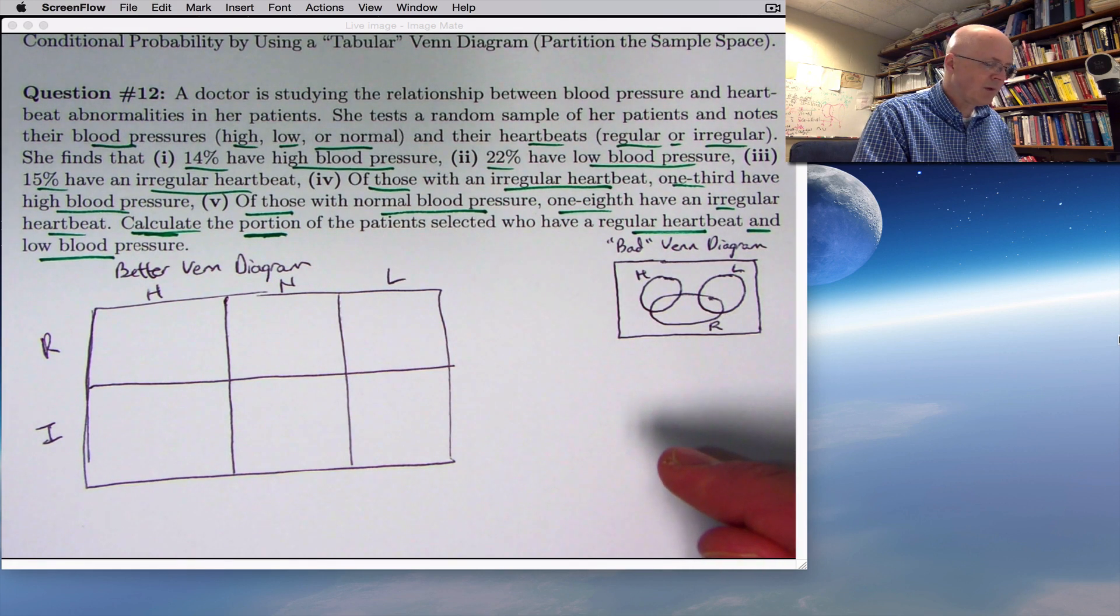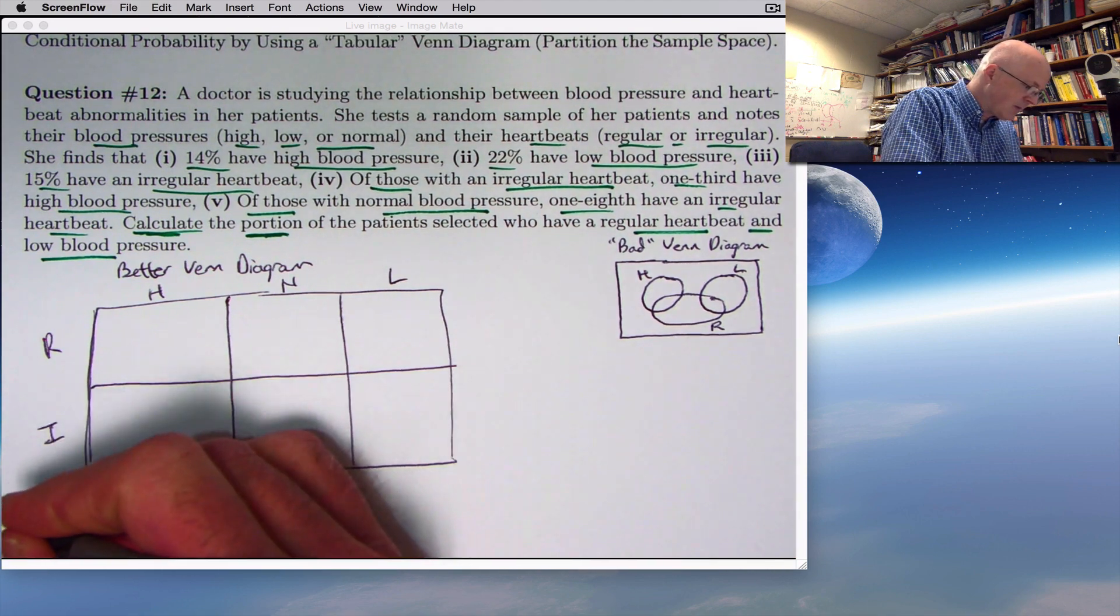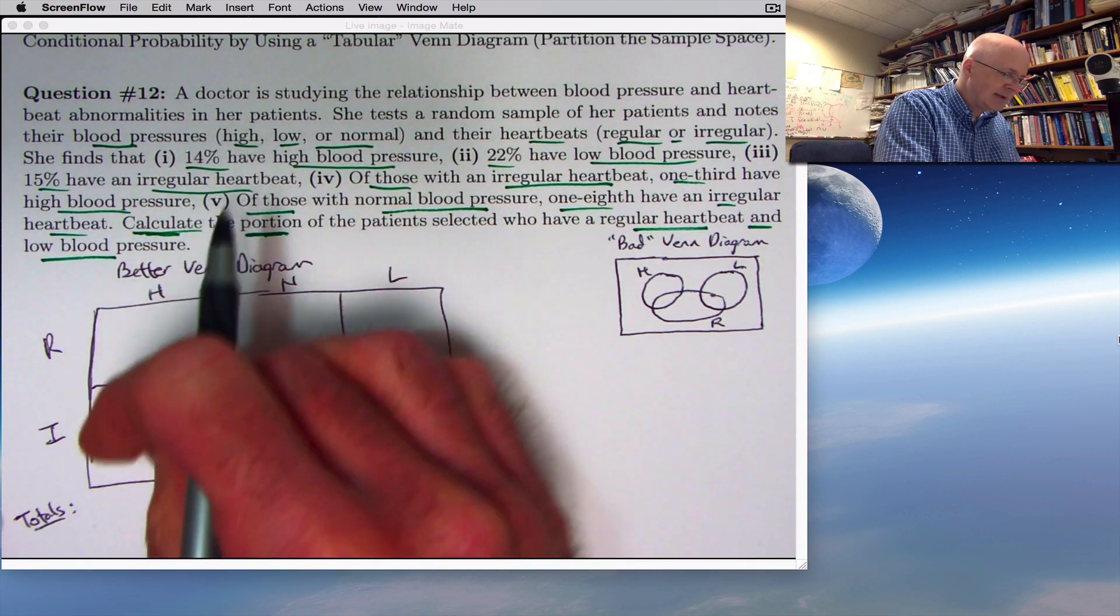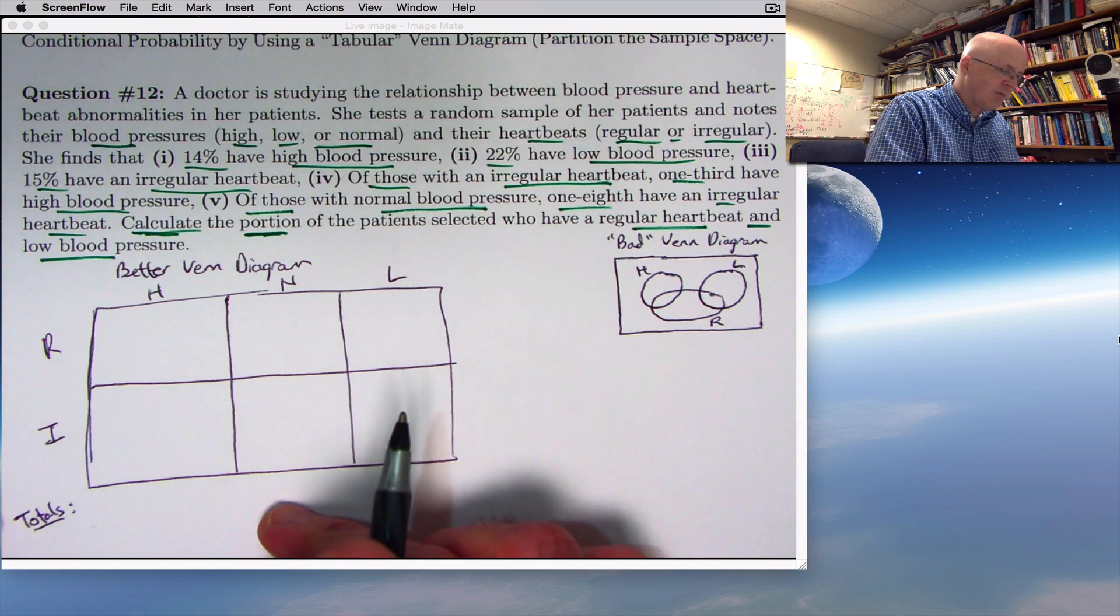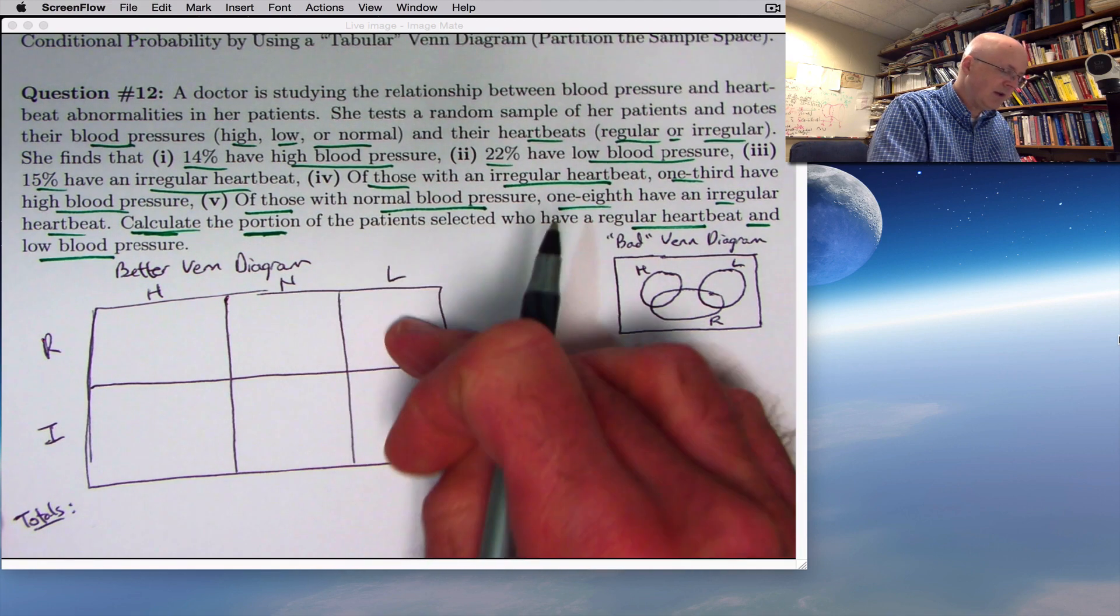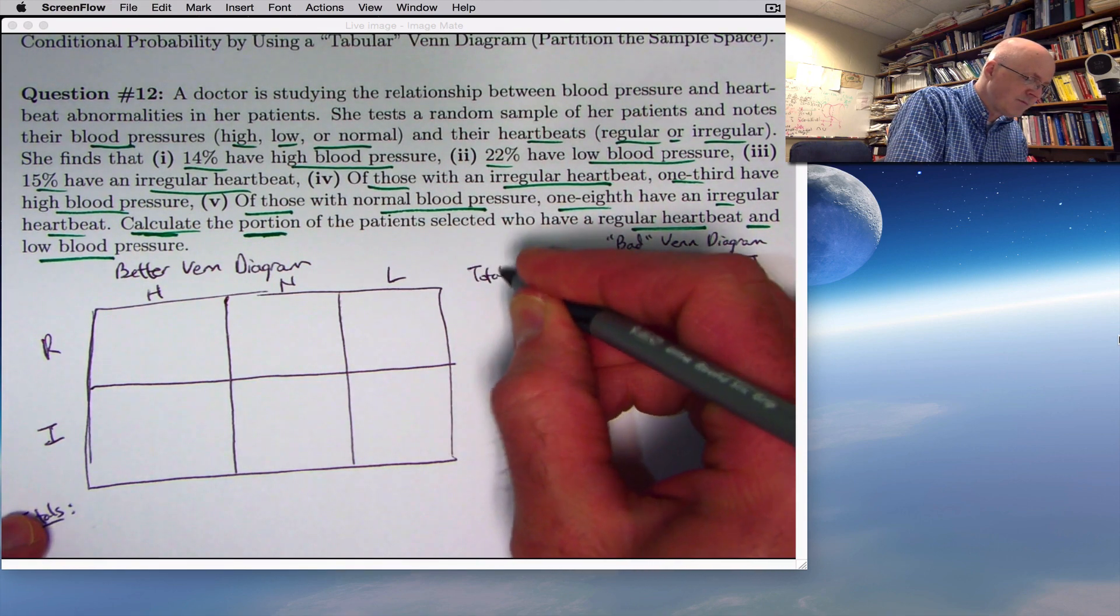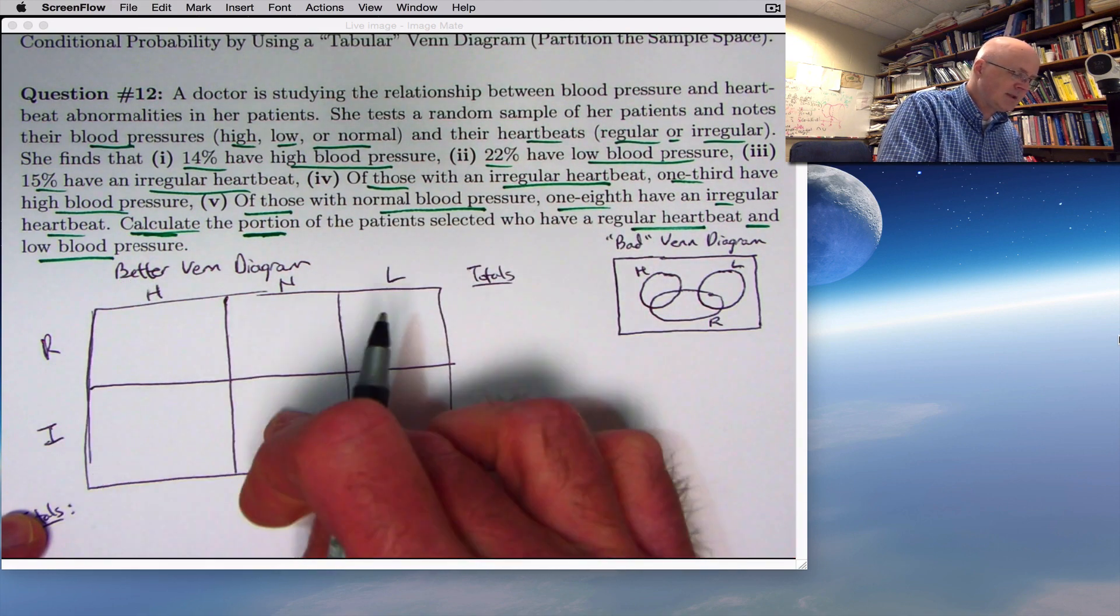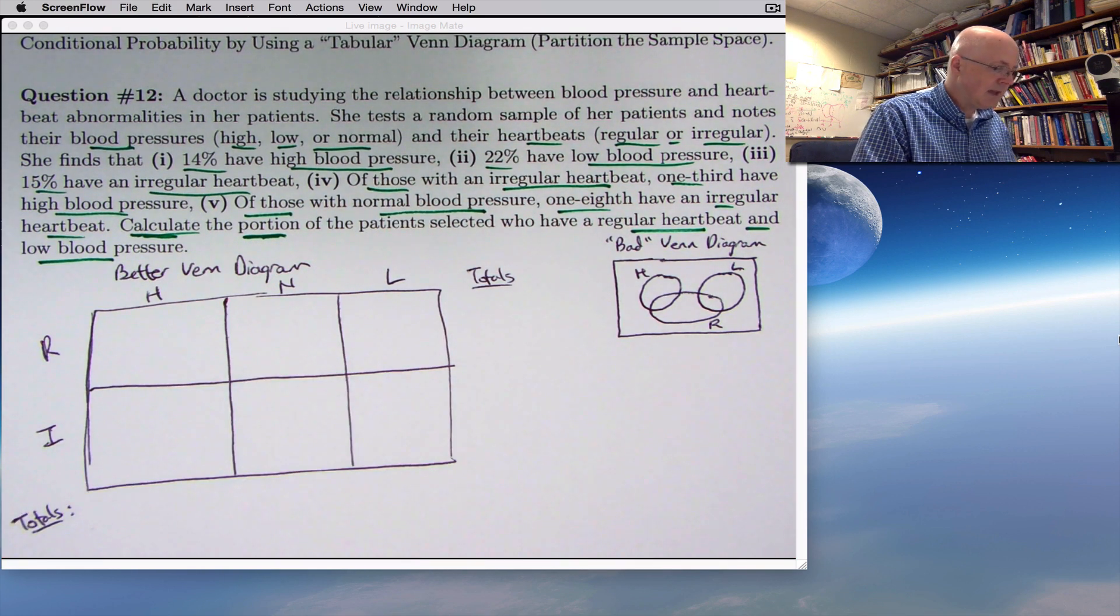And if you think about the information in 1, 2, and 3, what those probabilities really represent are totals, in a sense. So I'm going to go ahead and put the word totals down here. Imagine adding up the ordinary probabilities here and here to get the total for those with high blood pressure. Here and here to get the total for those with a normal blood pressure. Here and here to get the total for those with low blood pressure. And then I can also calculate totals across the rows. Add up the numbers in these three to get the total for those who have a regular heartbeat. And add up these three to get the total for those who have an irregular heartbeat.